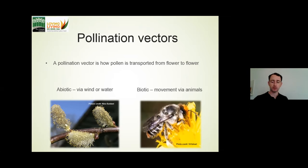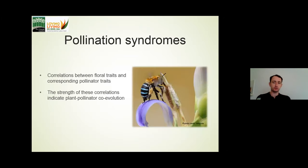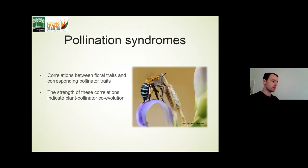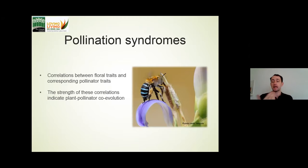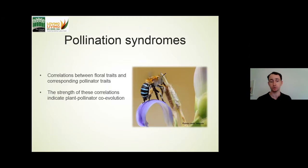The next concept is pollination syndrome — a term used to refer to corresponding traits between a flower and its pollinator. For example, a flower with a very long, deep corolla will likely have a pollinator with a very long proboscis to reach the nectar at the bottom. It's an excellent example of an indicator of co-evolution — the generality of these correlations across the natural world.